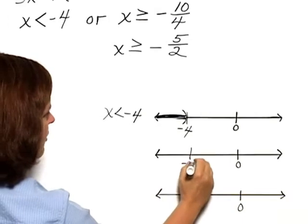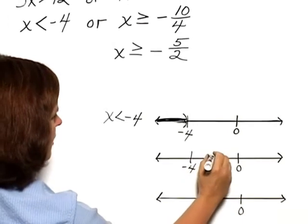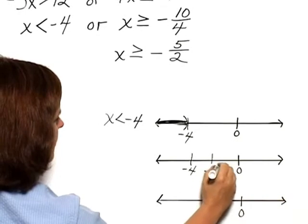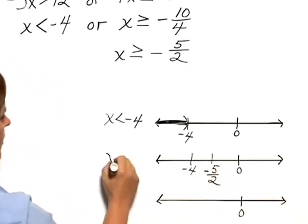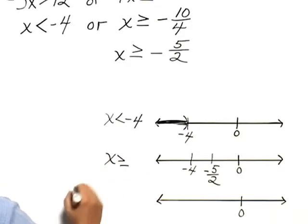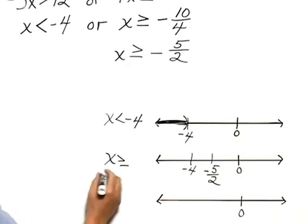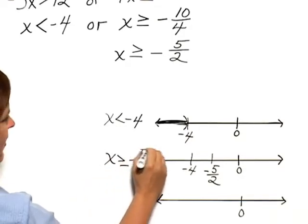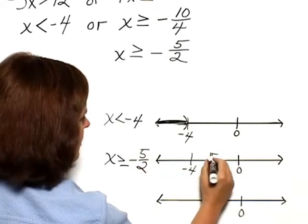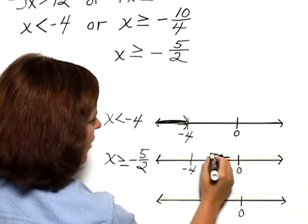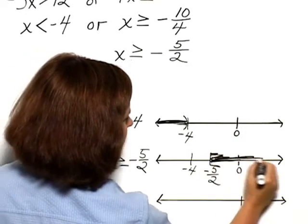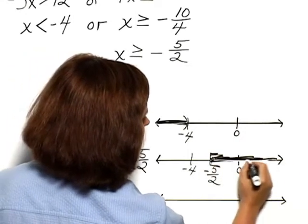Then, marking negative 4 and negative 5 halves on this line, we're going to shade the solutions to the second inequality, x is greater than or equal to negative 5 halves. We draw a bracket to show that we're including negative 5 halves, and we shade in that part of the number line.